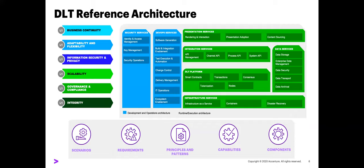About four years ago we started working on a DLT reference architecture — the first version was four or five years ago — and we've evolved it a couple times since then. What it was is essentially a standard way that DLT or blockchain platforms would integrate with the rest of the technology stack. When we look at a full production implementation, what are all the capabilities necessary to deliver a full solution for a customer? We developed this and it was quite complete as far as we were concerned.